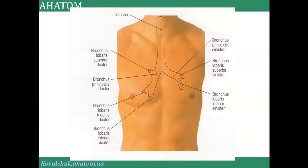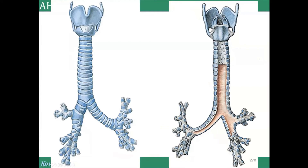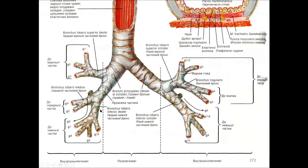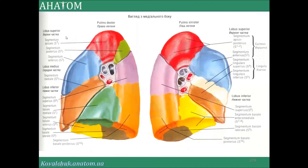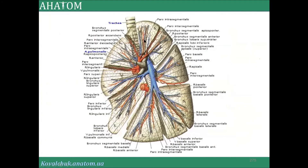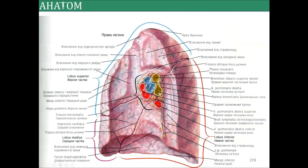Trachea divides at the bifurcation into the main bronchus — bronchus principalis in Latin — right and left bronchus. This bronchus moves into the lungs. And in the lungs, present the hilum — it's a place where bronchus, arteria, and veins of the lungs enter and exit. Lumbaris bronchus.